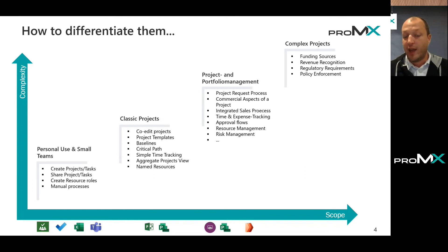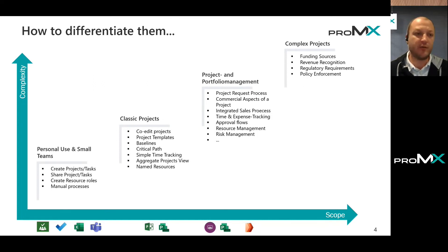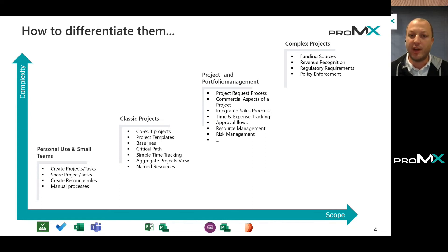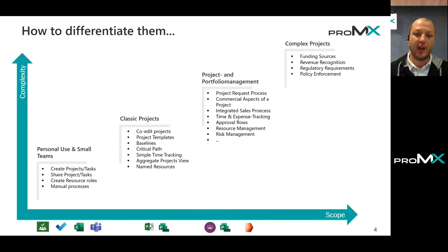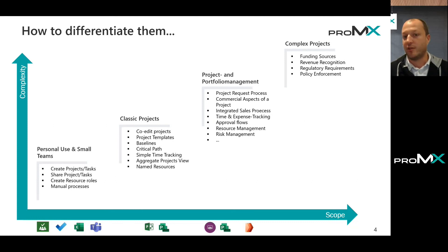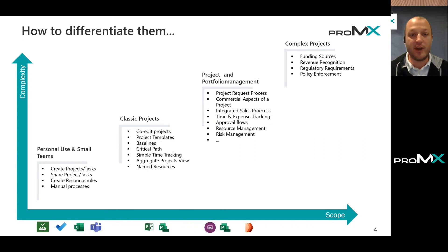Let's talk about what happens when we discuss project and portfolio management. Normally we talk about things like handling project requests, adding ideas for new areas, new programs, or new projects. We also need to handle commercial aspects of projects — for example, what happens if I staff a project manager or a senior consultant instead? Does this have an effect on the cost side of the project when I assign them specific tasks? And what happens if I replace a generic resource with a named resource? Those are more complex questions, because changing data on one side will have an effect on many data points on the other side, and those processes are fully integrated.